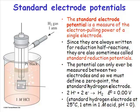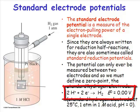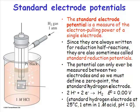People have defined the standard electrode potential for the reduction of protons with electrons to give dihydrogen as zero. So every other electrode potential can be measured relative to the standard reduction potential for hydrogen.